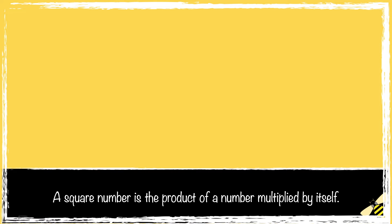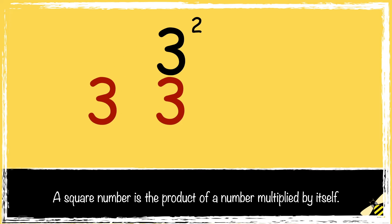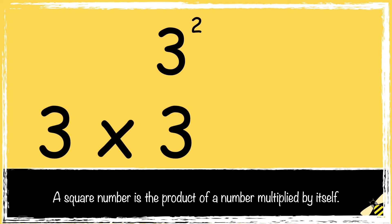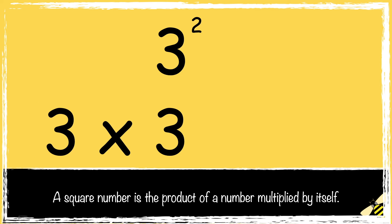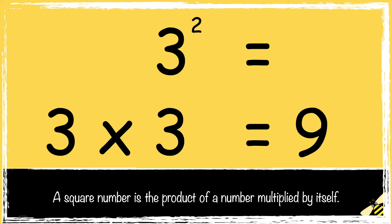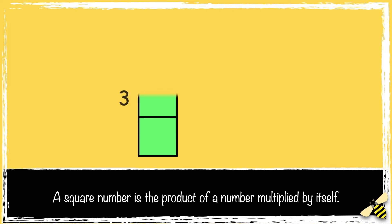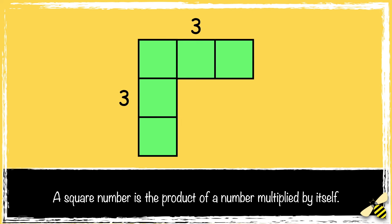Here's one more example. 3 squared is 3 multiplied by 3. 3 times 3 is 9, so 3 squared is 9. 3 multiplied by 3 makes a square of 9.